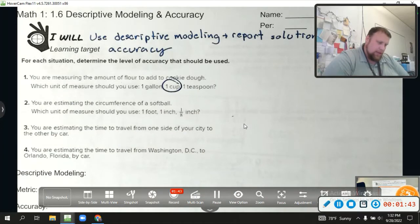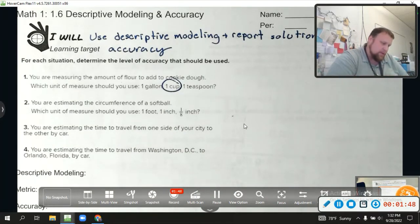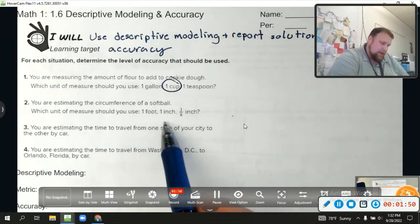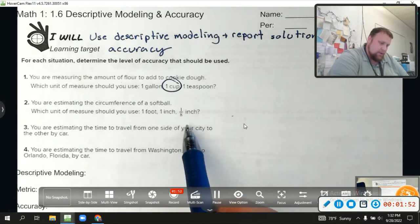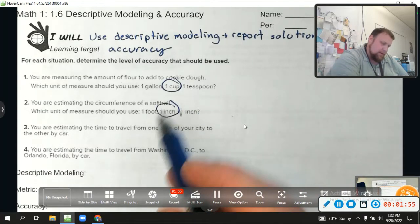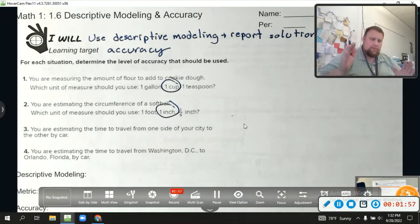You're estimating the circumference of a softball. It's about this big around. So am I gonna use feet, inches, or eighth inches? I would say inches, right? Foot's too big, right? Don't need that much to go around a softball.